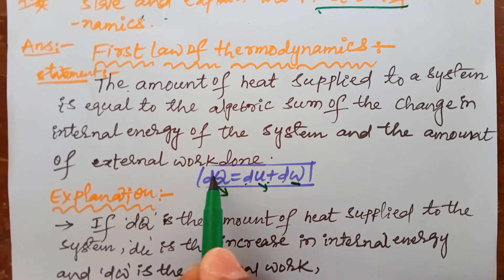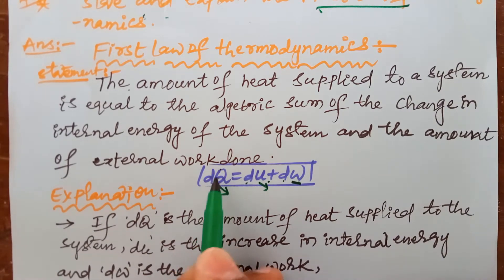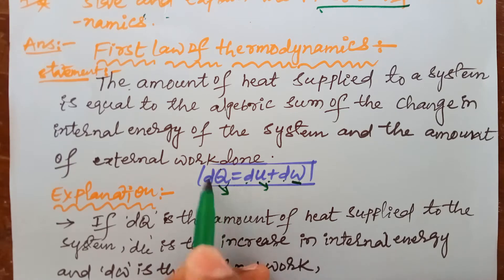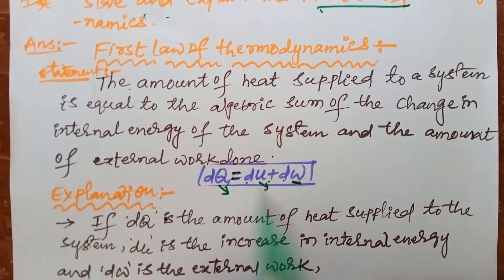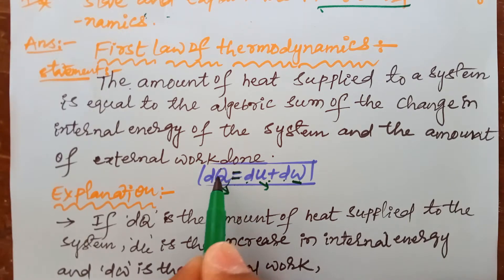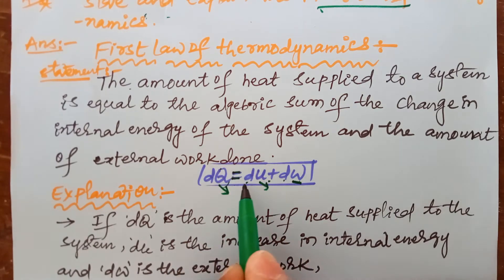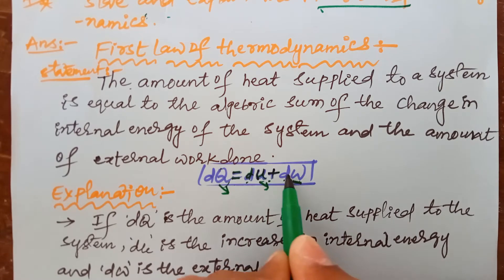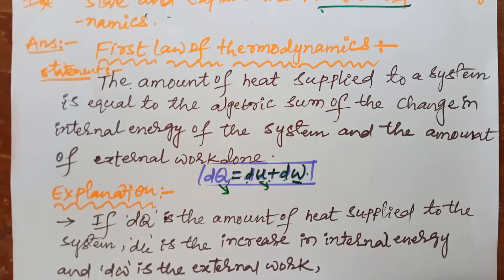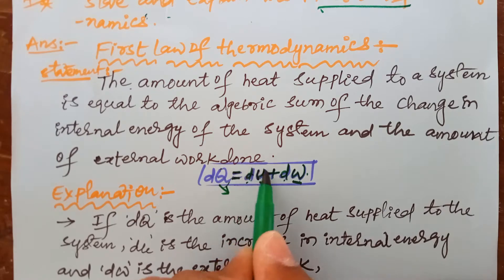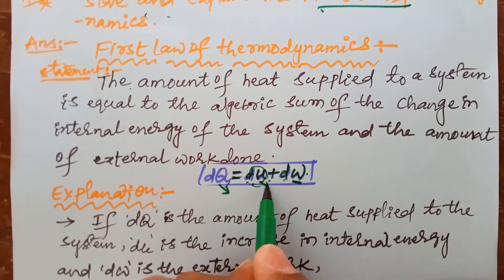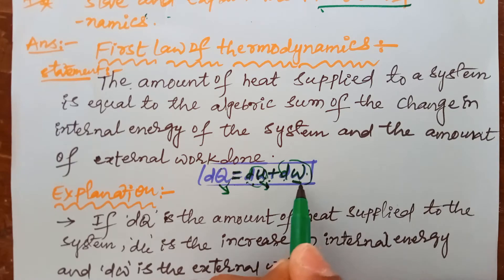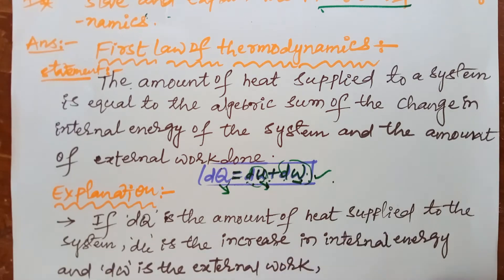dQ is the amount of heat energy supplied to the system, and it equals the sum of the change in internal energy as well as the external work done. Some energy is changed as internal energy and some energy goes into external work done — this is the first law.